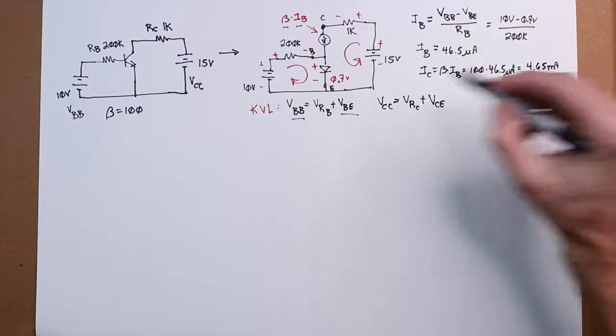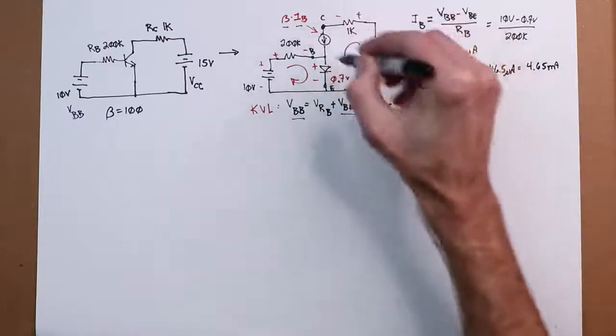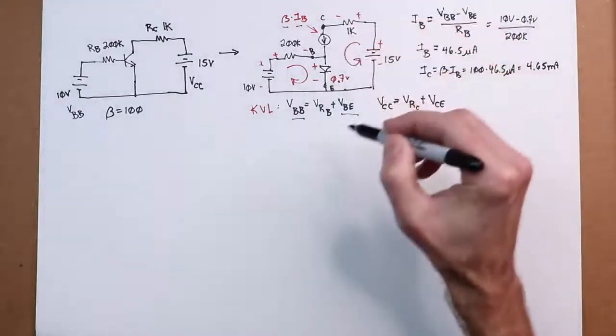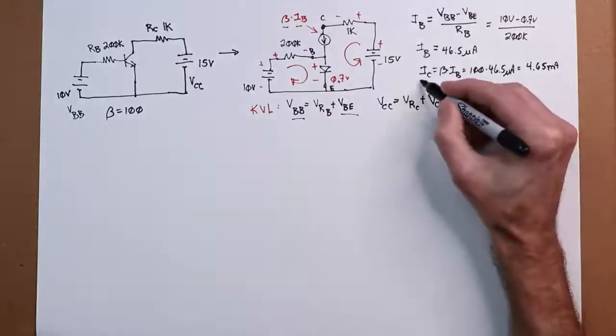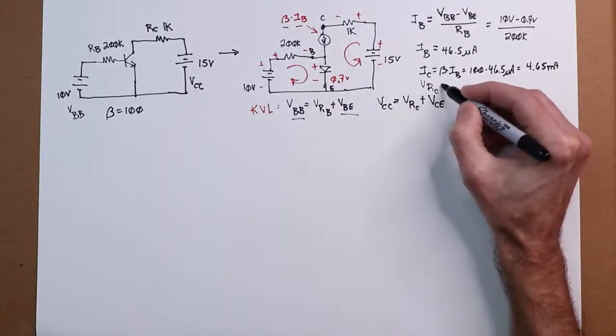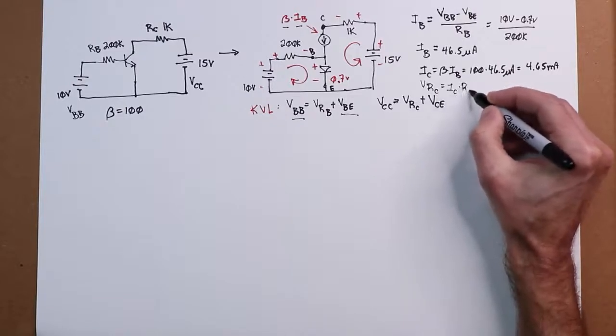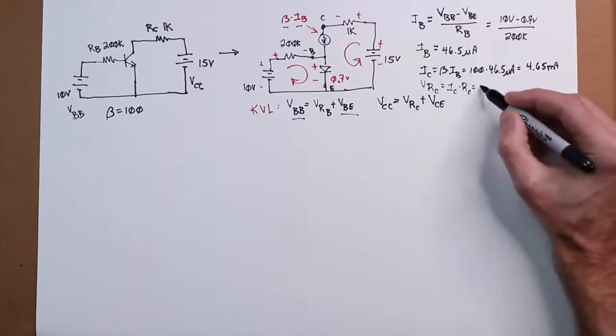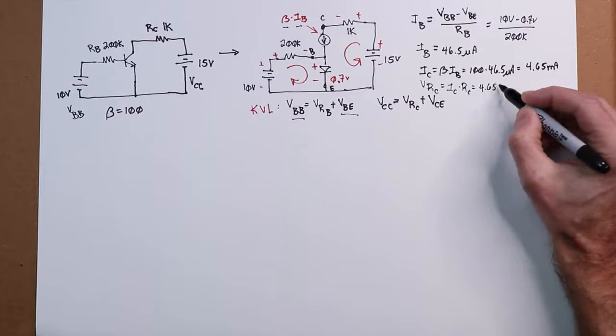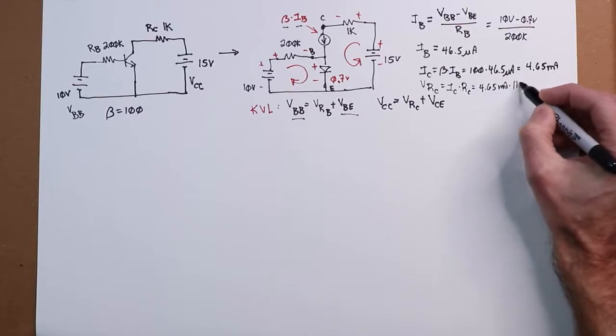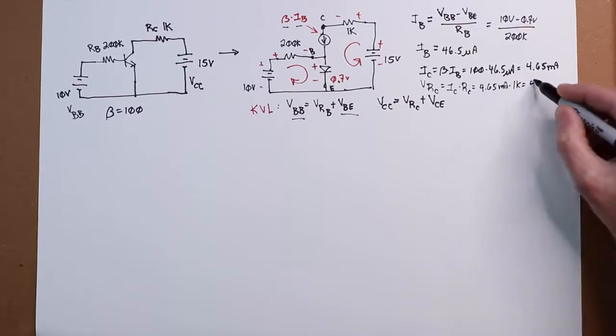That's our clue into the second loop. We now know this current, that's IC, which immediately allows us to find the voltage across the collector resistor. That's just Ohm's law, IC times RC. So you take your 4.65 mils, multiply it by 1k, you've got 4.65 volts.